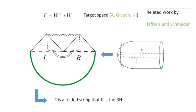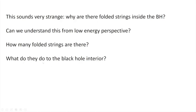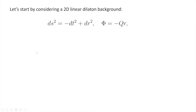On the worldsheet you have a product of winding-plus and winding-minus fields. From the target-space point of view, these two windings going in opposite directions can form a folded string — a string that folds toward the black hole. This field S is therefore a folded string filling the future interior of the black hole. This raises questions: why are there folded strings inside the black hole, how many are there, and what do they do?